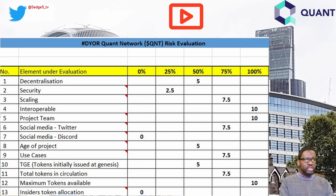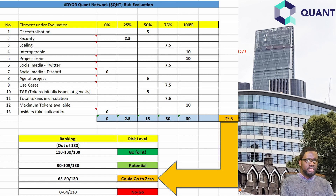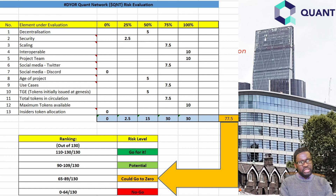The aggregate score for Quant Network comes in at 77.5 points out of 130. Do you guys agree with the individual scores we've issued to each of the 13 elements? Let us know in the comment section. Do you agree that 77.5 out of 130 is a good reflection of Quant Network as a project, bearing in mind that Quant Network is one of the few projects that has been doing rather well during this bear market?